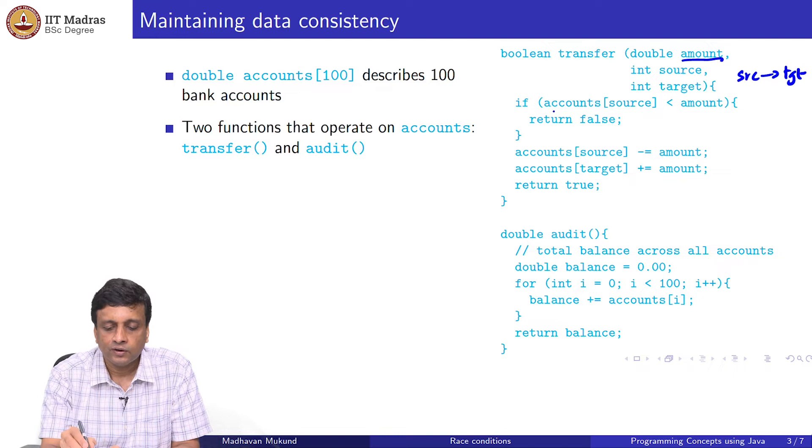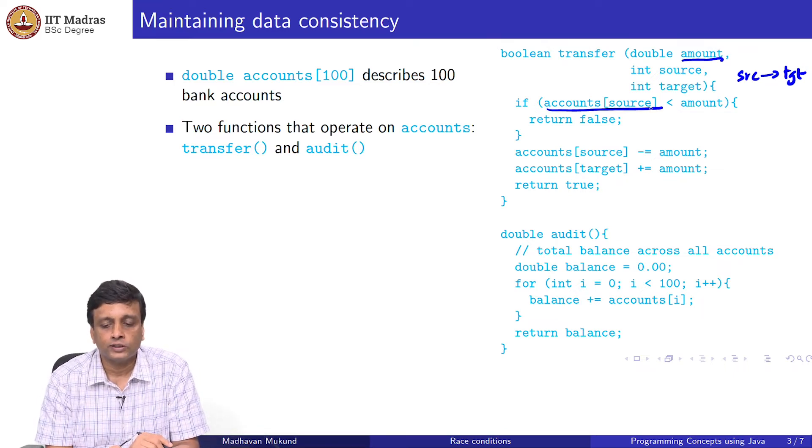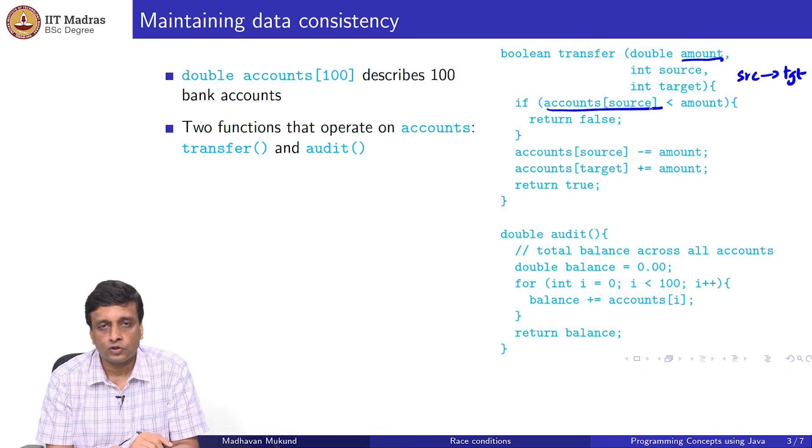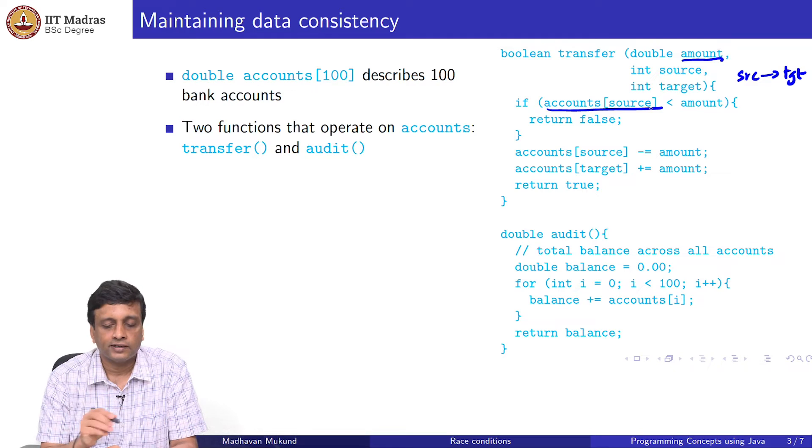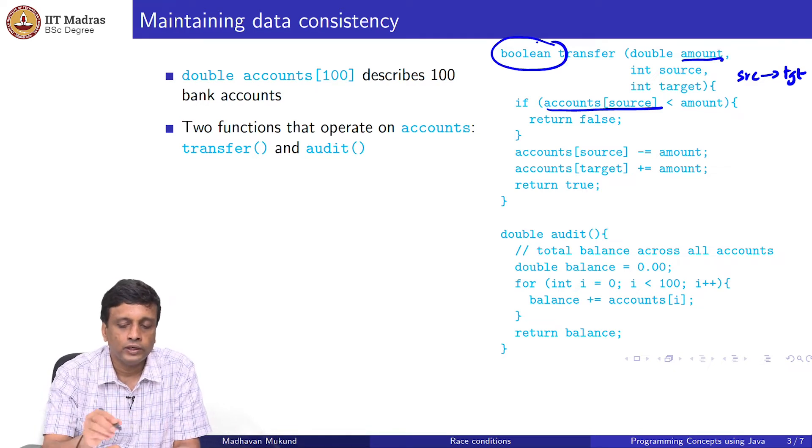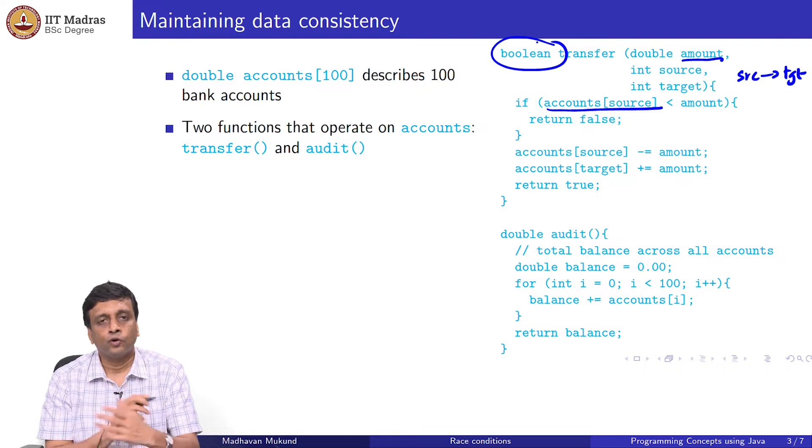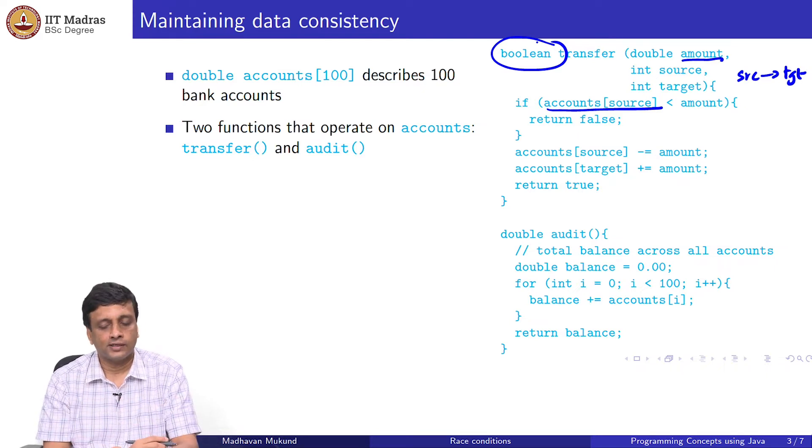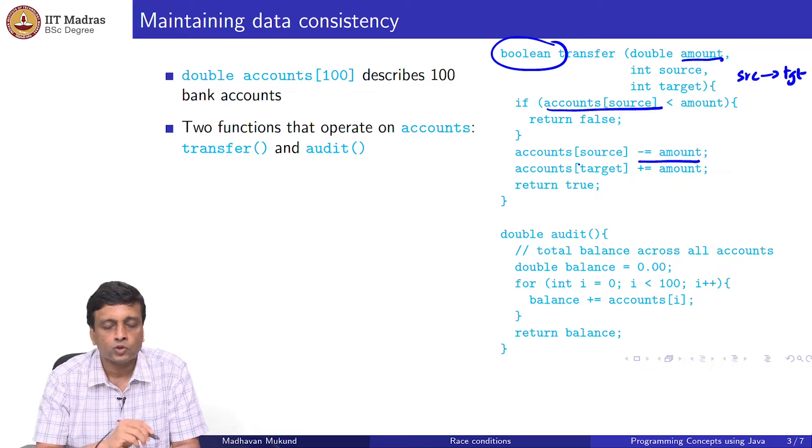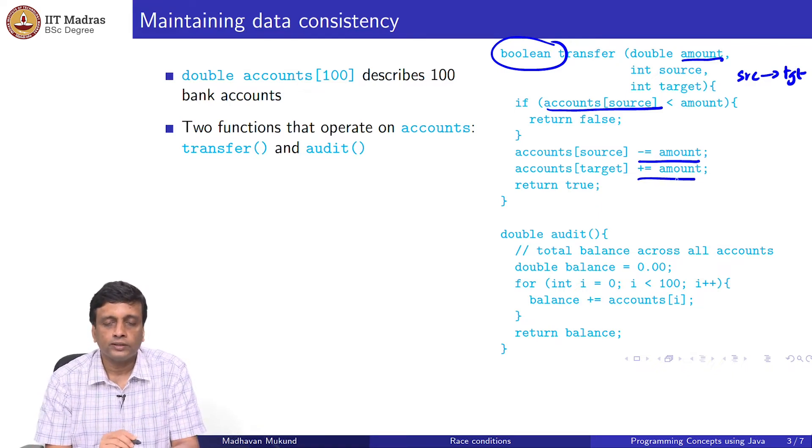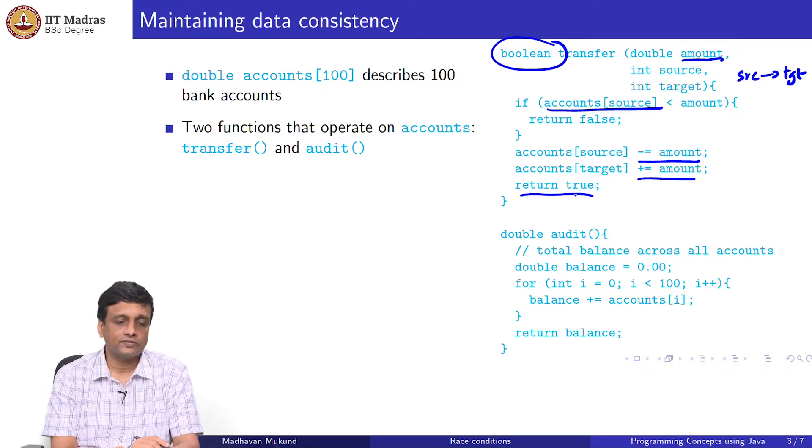What we first check is whether the source account has enough money. If the amount that is stored currently in the balance of the source account is less than amount, then we just say that this transfer did not succeed. We have a Boolean which indicates whether the transfer worked or not. If you do not have enough balance, you cannot transfer the money. Otherwise, you subtract the amount from the source, add the amount to the target, and return true.